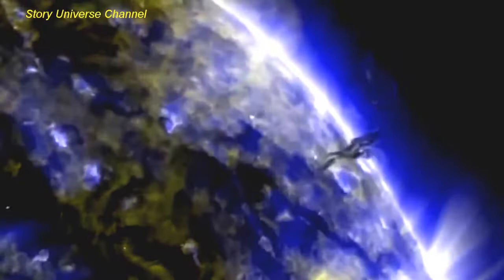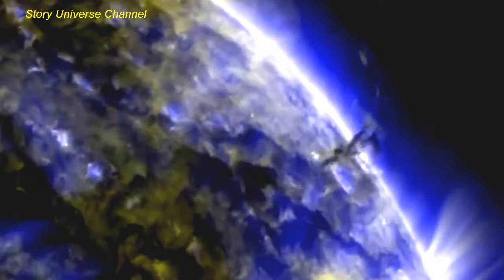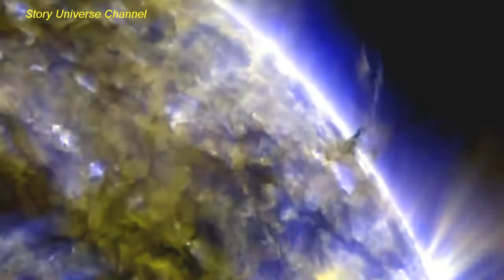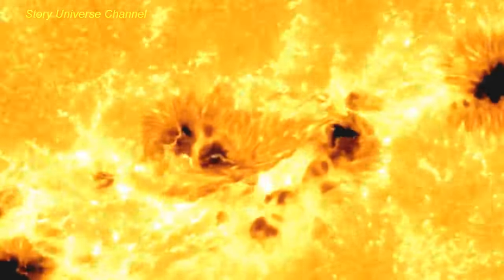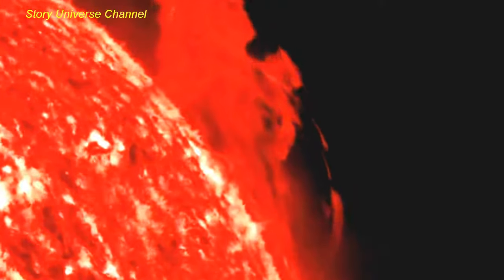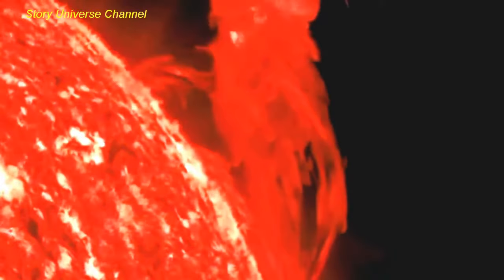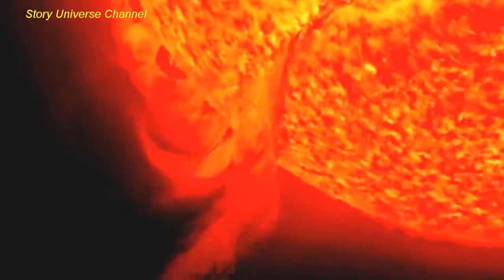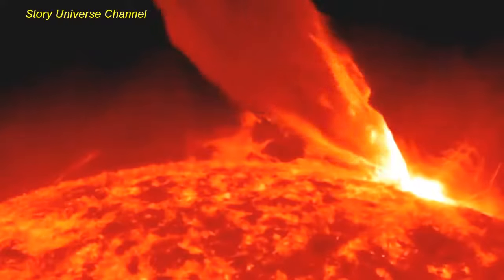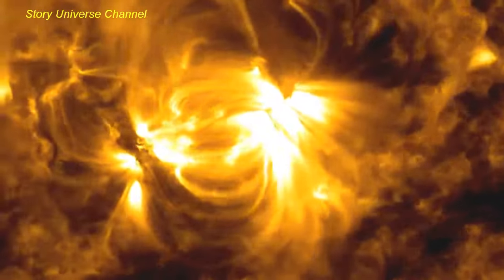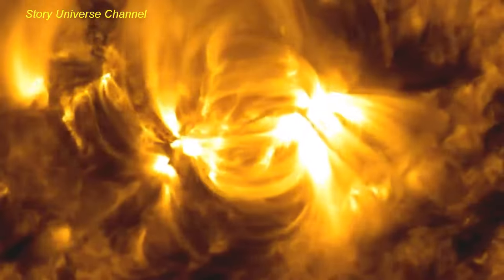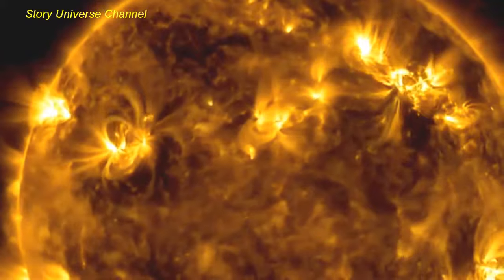It's an alien landscape where magnetic tornadoes twist upward tens of thousands of miles. Mysterious dark spots large enough to engulf the Earth ebb and flow, and violent eruptions shoot tons of charged particles into space at speeds of over 2 million miles per hour.